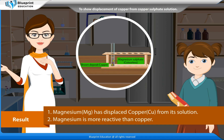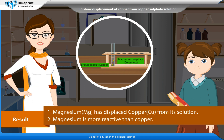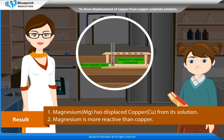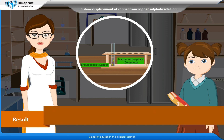Result: Magnesium (Mg) has displaced copper (Cu) from its solution. Magnesium is more reactive than copper. Magnesium plus copper sulphate (blue) gives magnesium sulphate (colourless) plus copper.